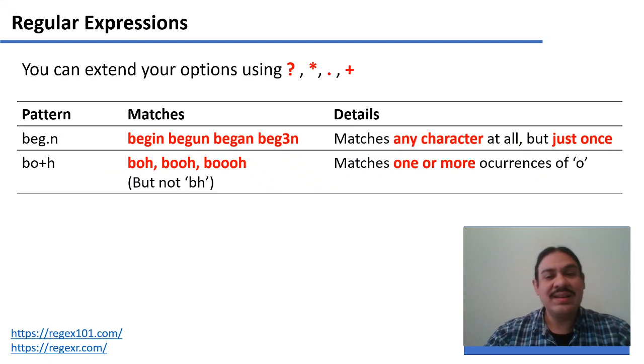The plus sign allows you to find something one time or more times, once or more. So this will mark bo, boo, but not B-H, because you need the O to occur at least once.